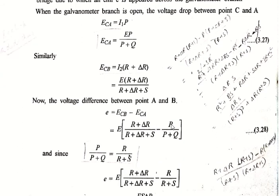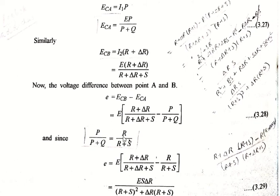The voltage difference between points A and B — the EMF across the galvanometer — equals E_CB minus E_CA. This gives the galvanometer EMF as: e = E × [(R + δr)/(R + δr + S) − P/(P + Q)]. Since P/Q = R/S, we can show that P/(P + Q) = R/(R + S).